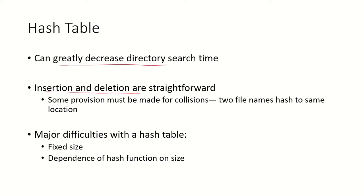Using a linear list along with a hash table greatly decreases the directory search time. Also, insertion and deletion are straightforward — you can simply add that information in the hash table. However, some provision must be made for collisions, meaning if two file names hash to the same key, some kind of handling is needed.